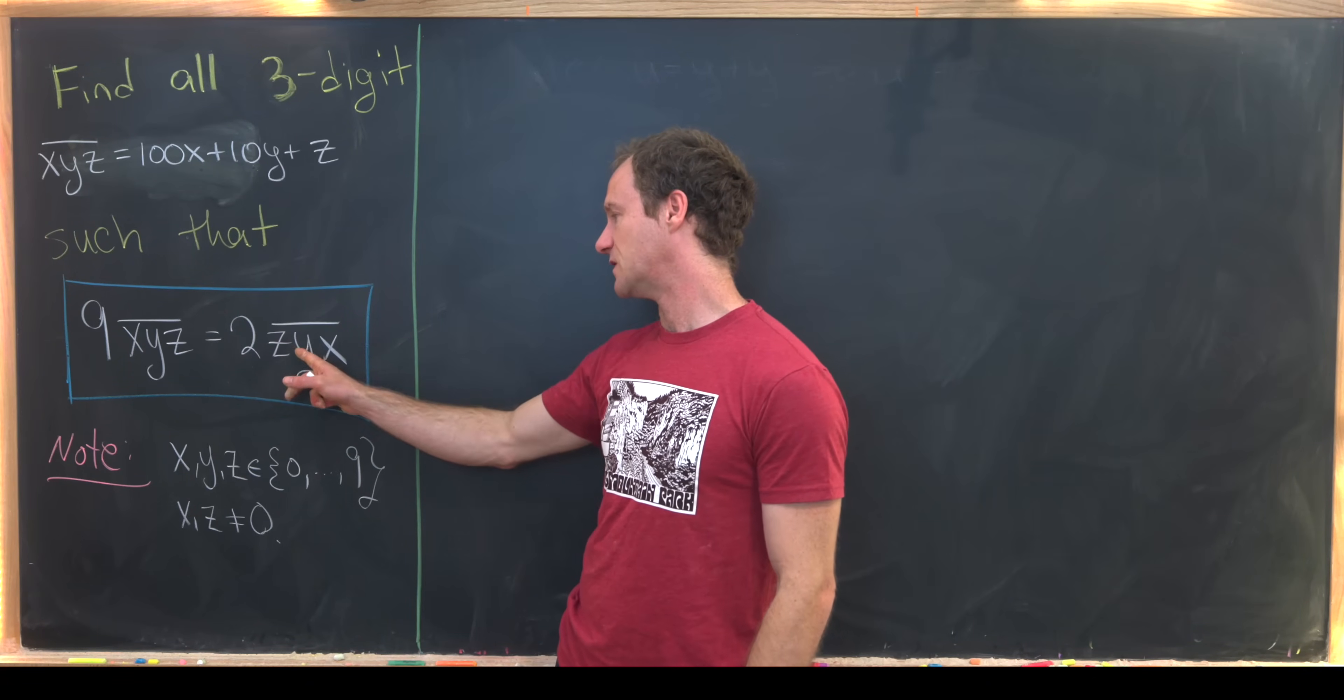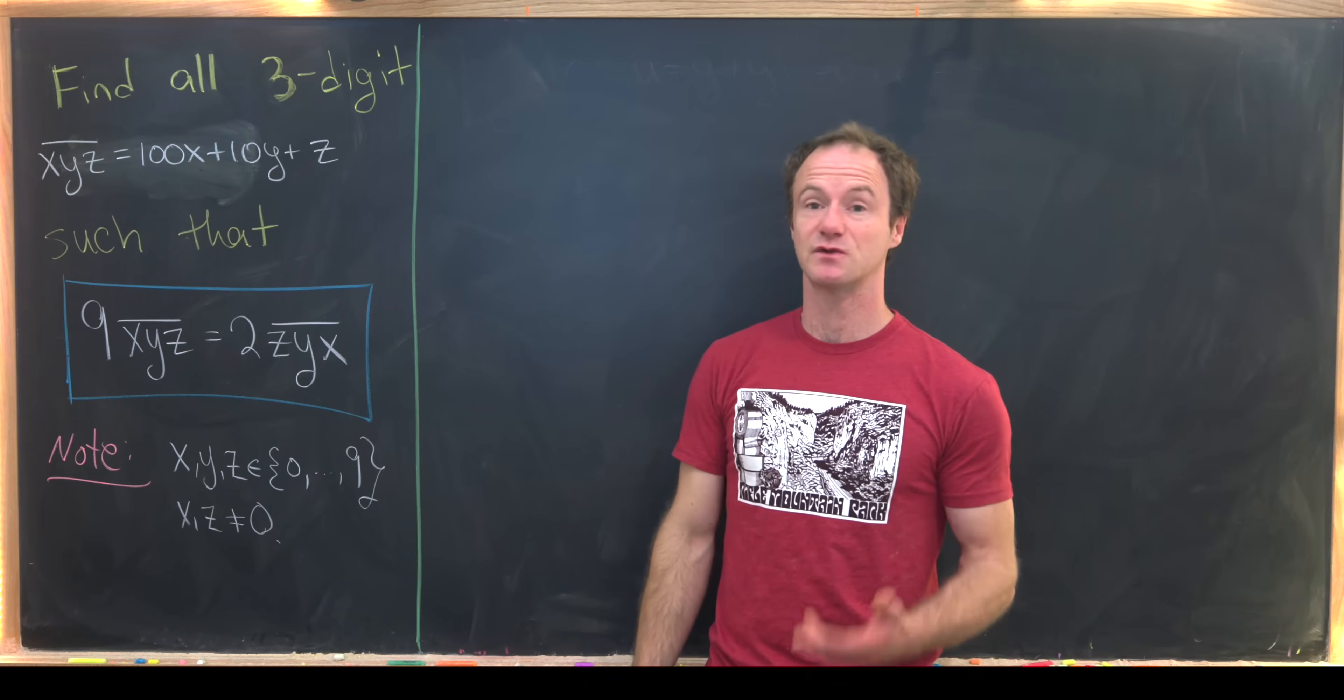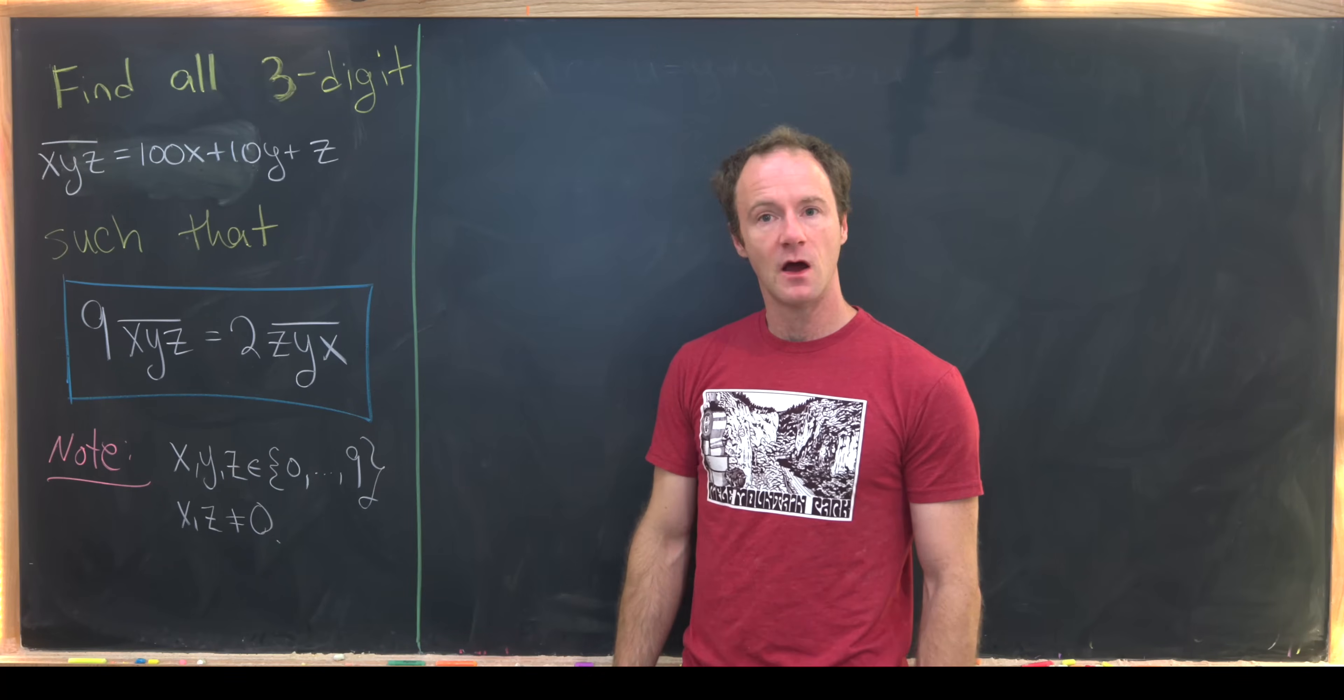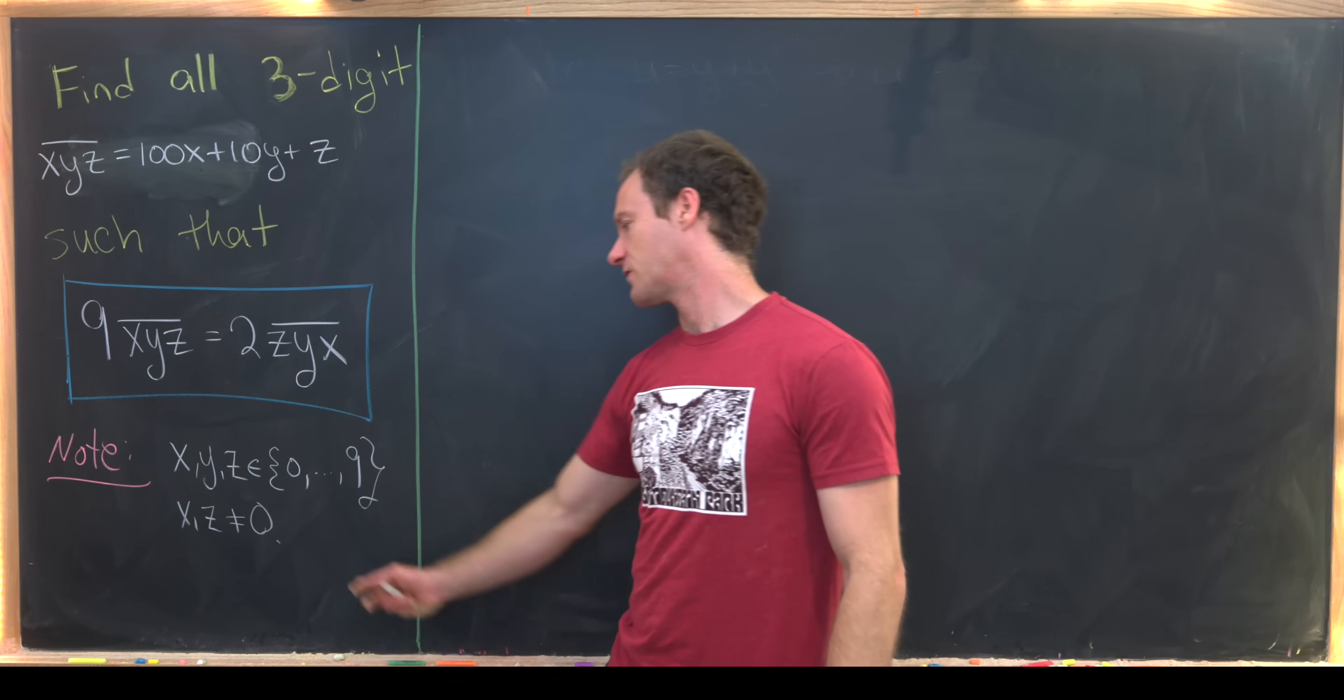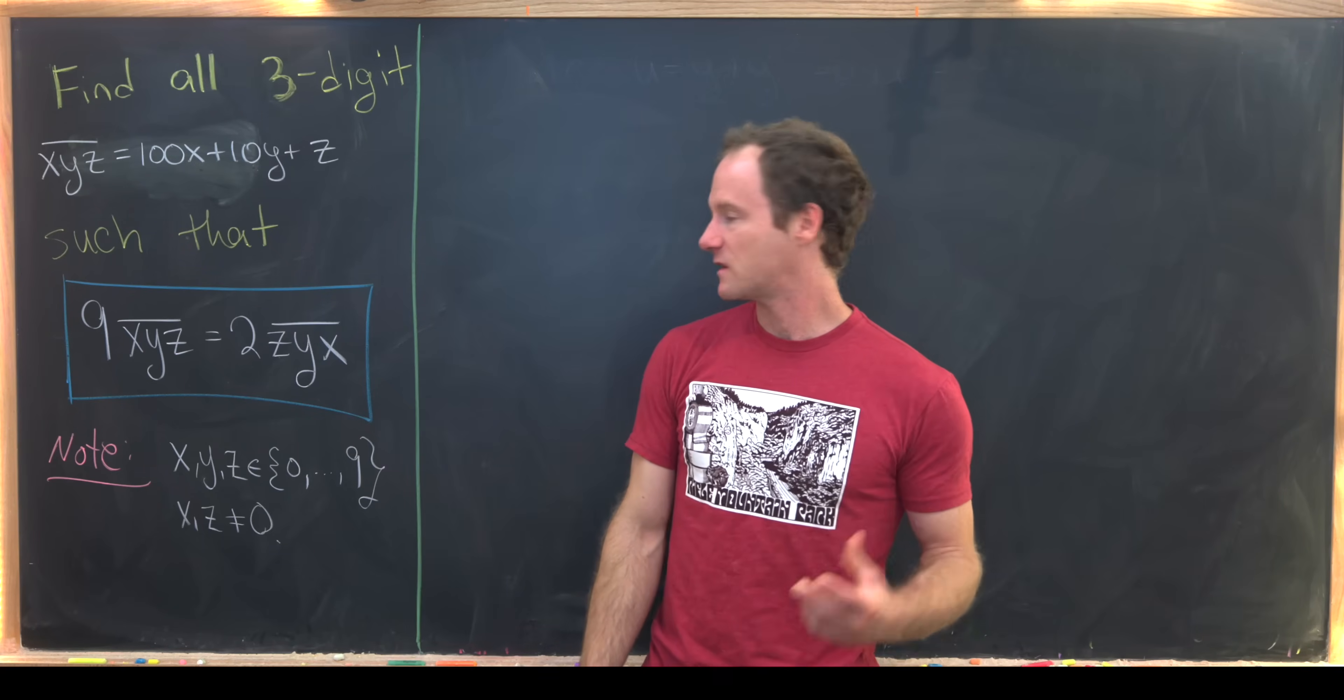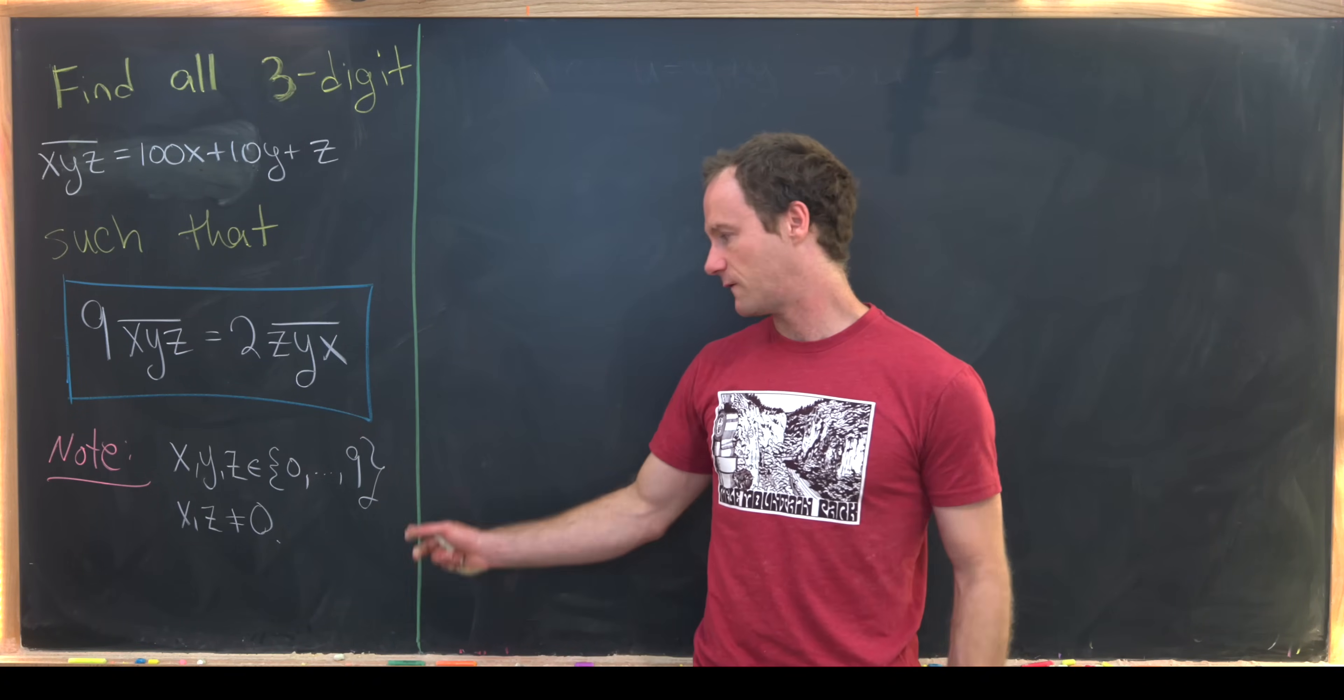And that is 9 times that three-digit number is equal to 2 times the three-digit number with the digits mixed up a little bit. Notice here we have z, y, x. In other words the hundreds digit and the ones digit have been switched. And just to reiterate, x and z are not equal to 0 because we definitely want to have a three-digit number on both sides of this equation.